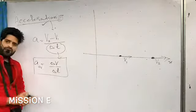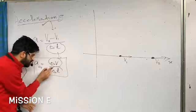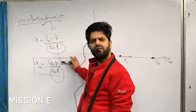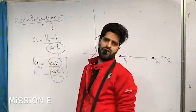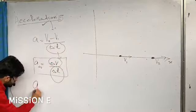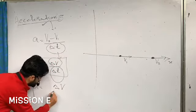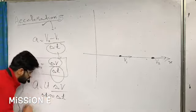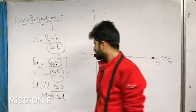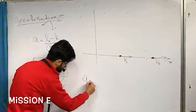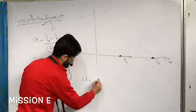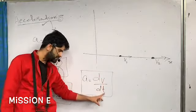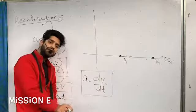Average acceleration is the total change in velocity of the particle divided by the total time taken to change the velocity. To define instantaneous acceleration, we use delta v by delta t, but the time interval should tend to zero — which mathematically becomes dv by dt. If we differentiate the velocity function with respect to time, we get the instantaneous acceleration of the particle.